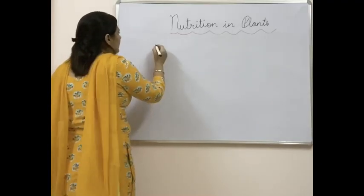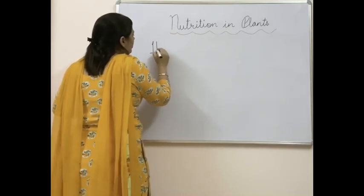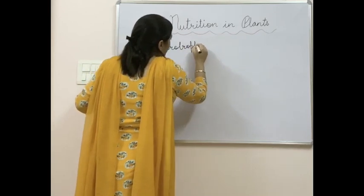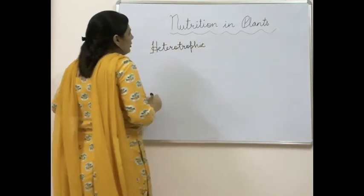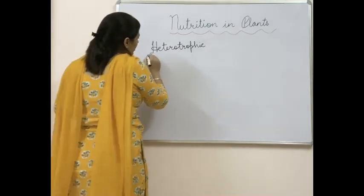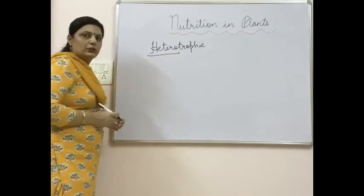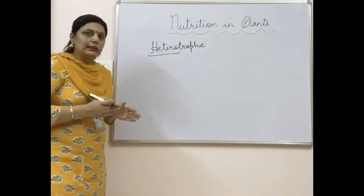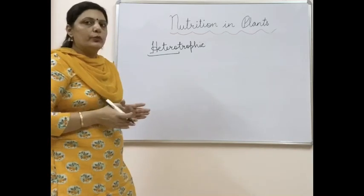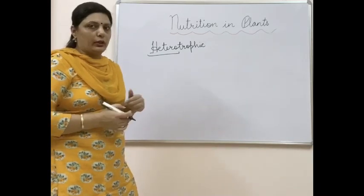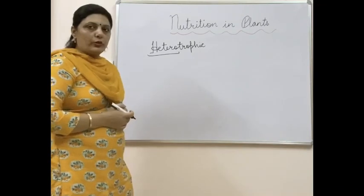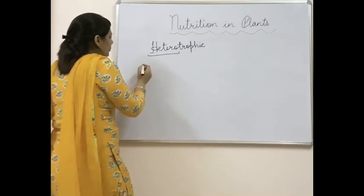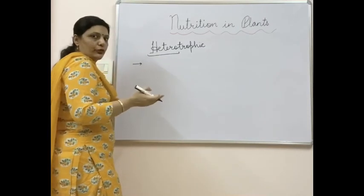The second mode of nutrition is the heterotrophic mode of nutrition. Hetero means 'other' and trophic means 'to synthesize,' so organisms with this mode are not able to synthesize their own food but take food synthesized by other organisms. There are four ways for heterotrophic mode of nutrition.